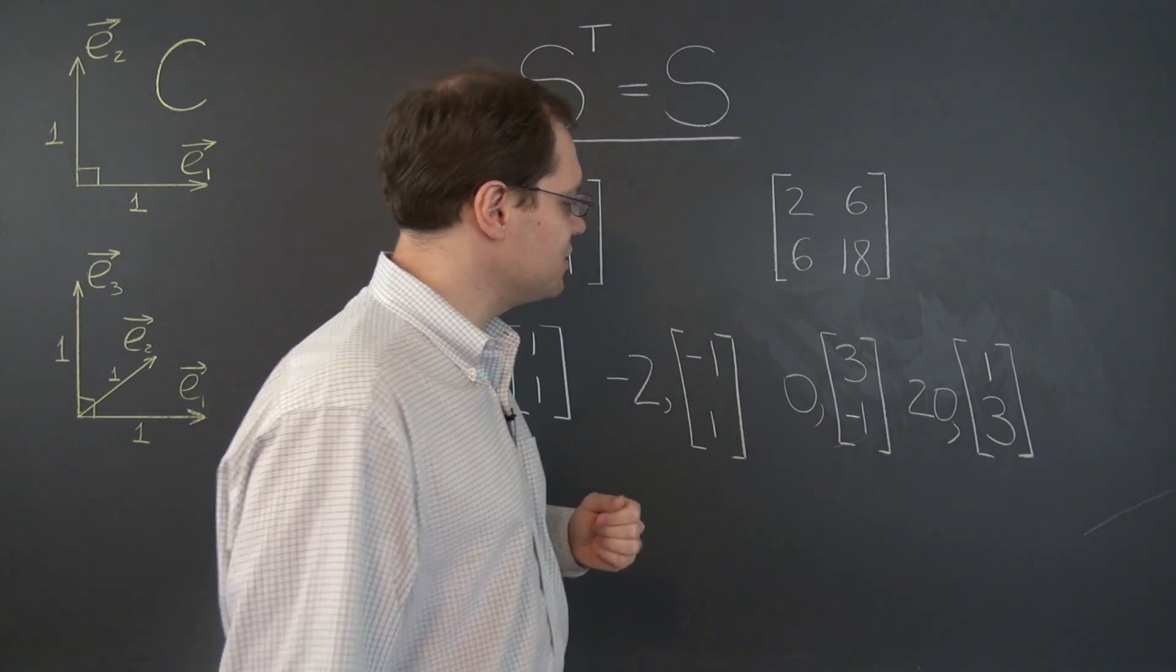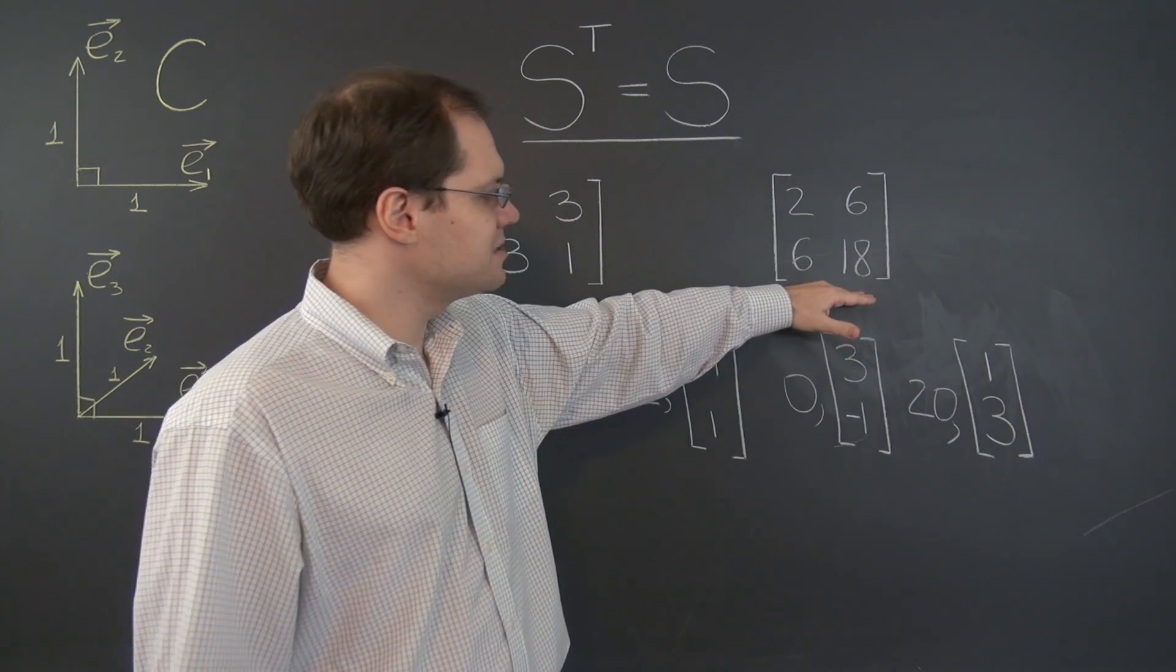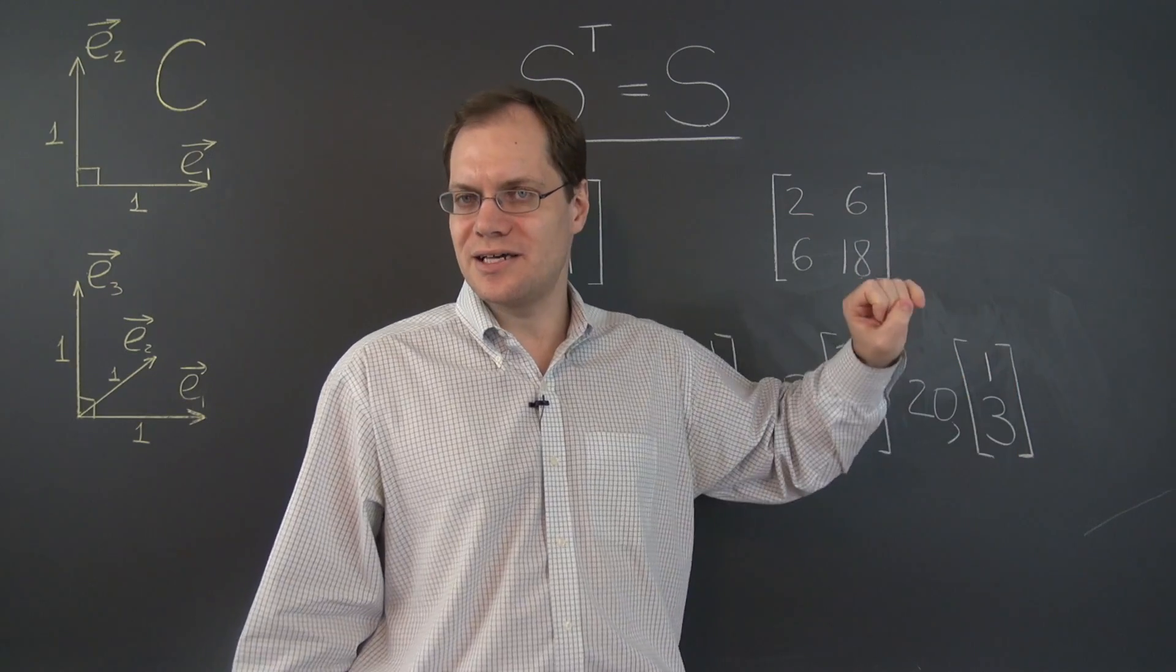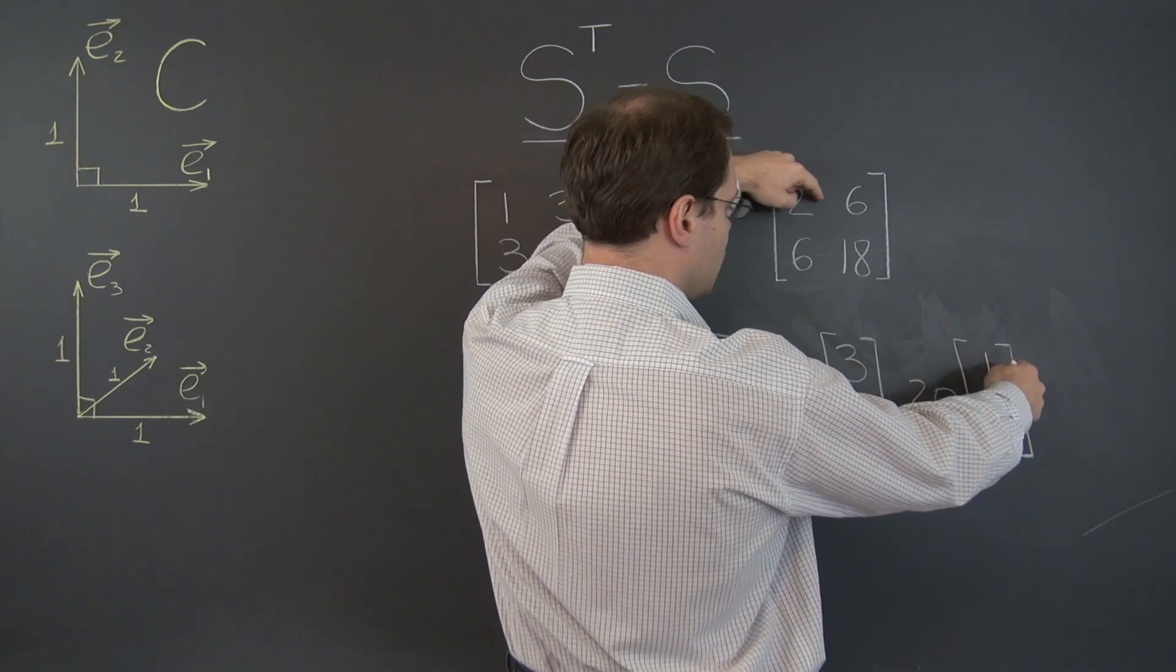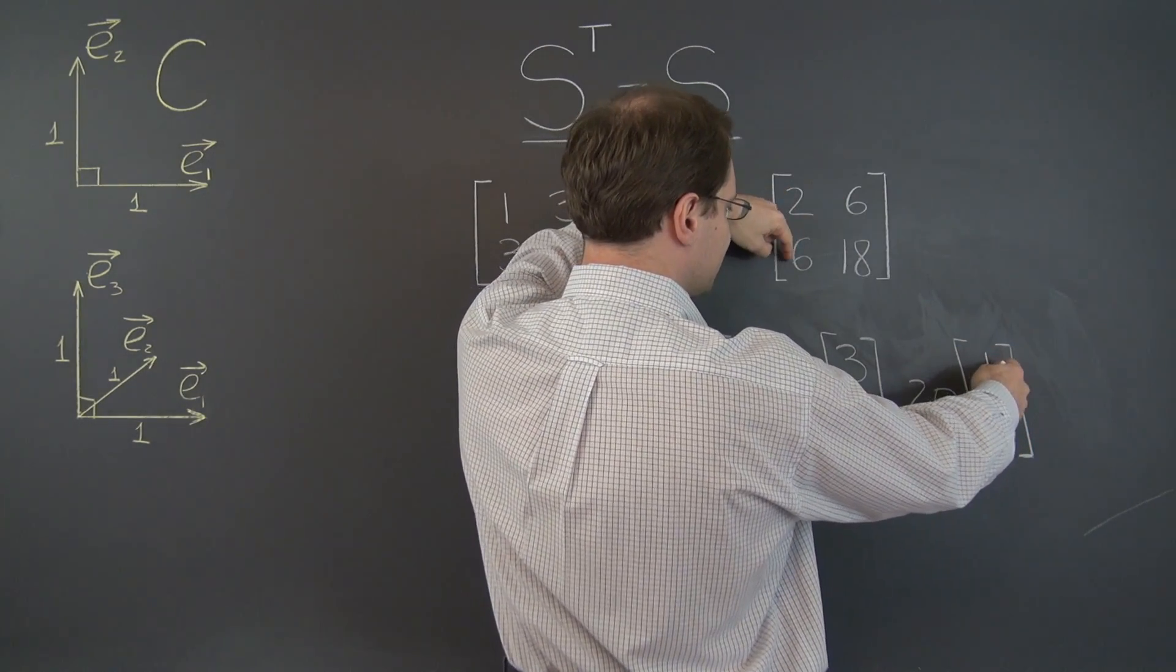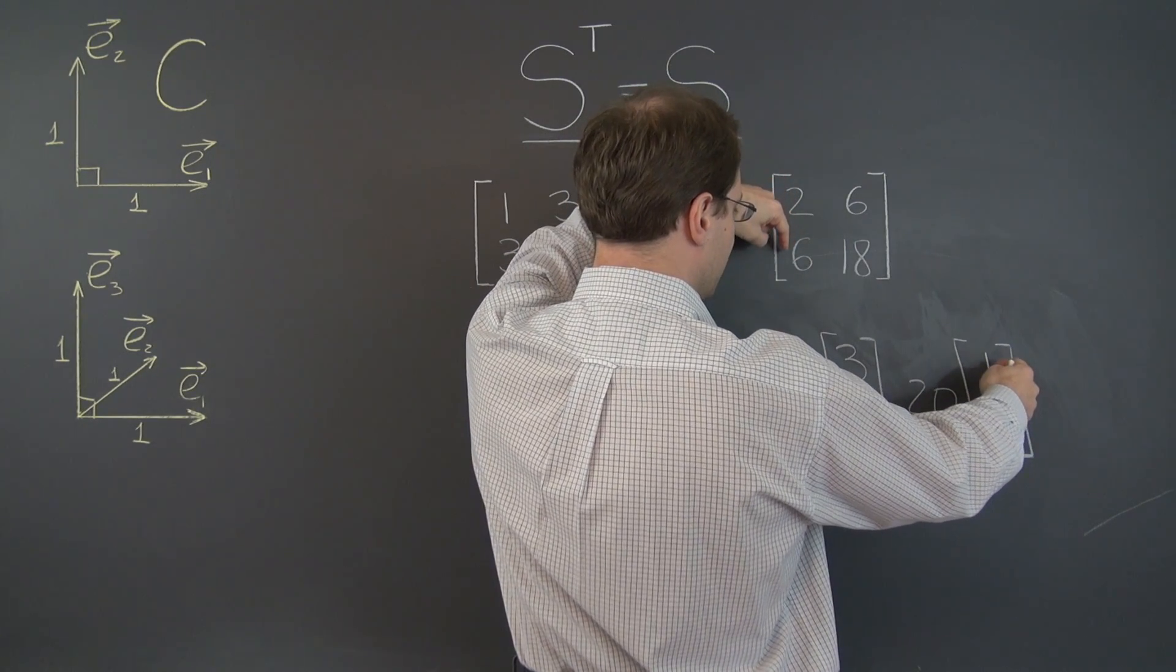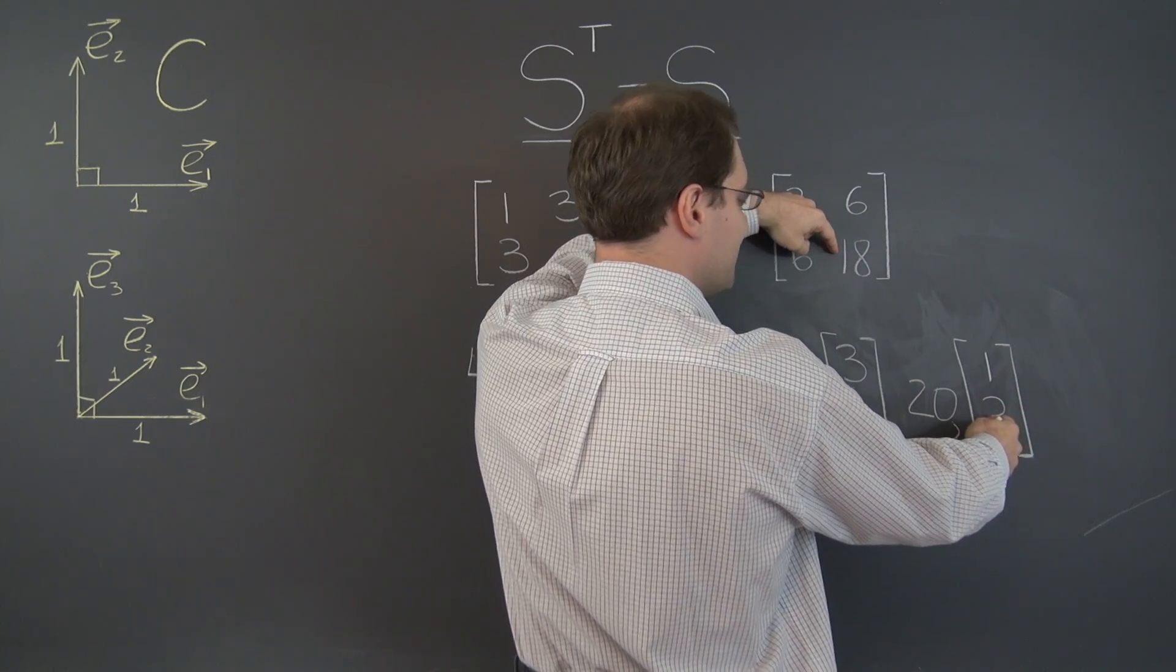And let's, just for the pleasure of it, make sure that this pair works. In other words, we'll multiply this matrix by this vector and make sure we get 20 times the vector. So carrying out that multiplication, we have 2 plus 18. That's 20. And we have 6 plus 54, 60.